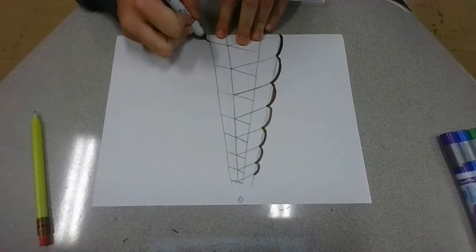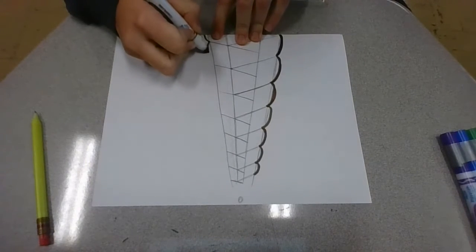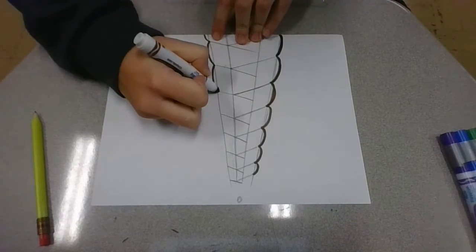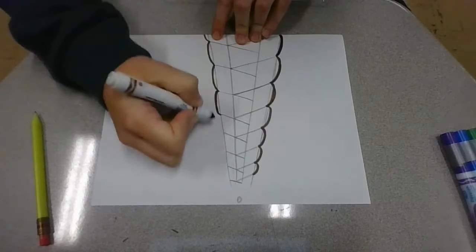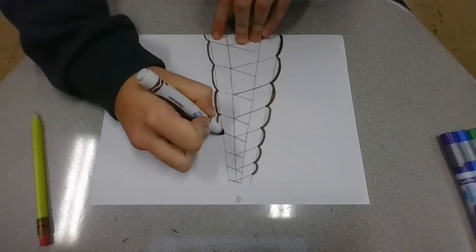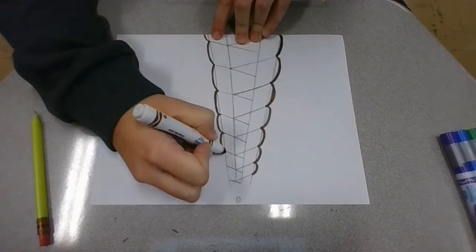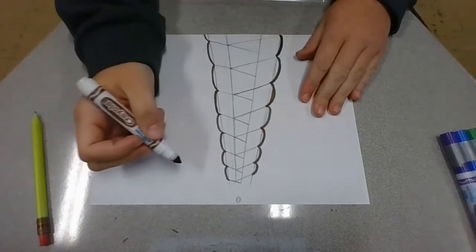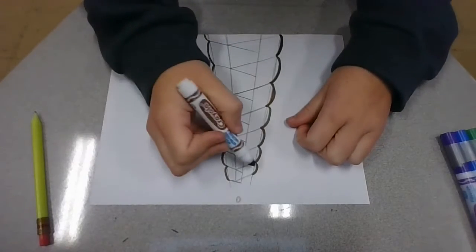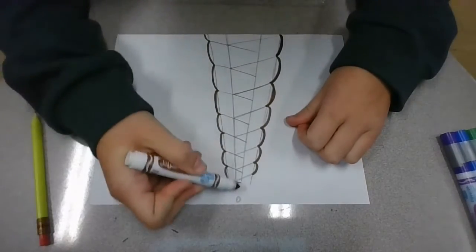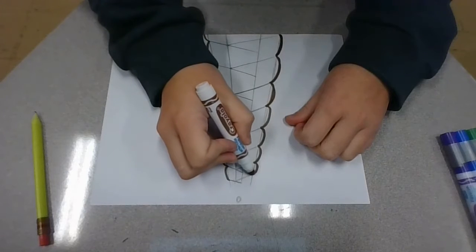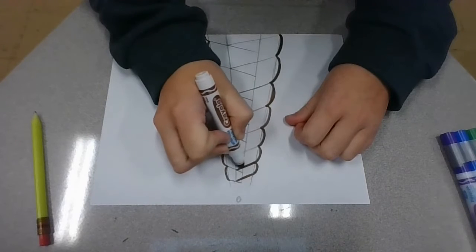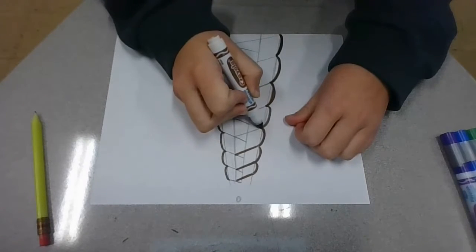I'm going to do the same thing on the other side. Now what I'm going to do is go ahead and trace the last lines we drew. I'm not doing the four lines. I'm tracing the other lines. So the lines that we drew the most recently, not the four lines going down.